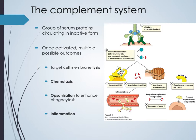The complement system is made up of serum proteins found in circulation in the blood in their inactive pro-form. Once activated, they can lead to different outcomes. Activation of a complement protein can target the cell membrane for lysis — binding to the membrane and initiating further complement protein activation — ultimately resulting in the cell being lysed.